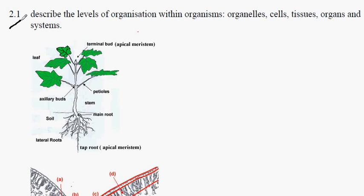EdExcel Biology 2.1, and we're looking here at different levels of organization within an organism. So we've got the organism made up of organelles, cells, tissues, organs, and systems.